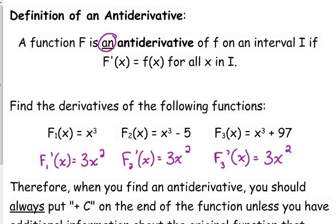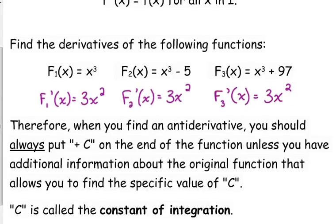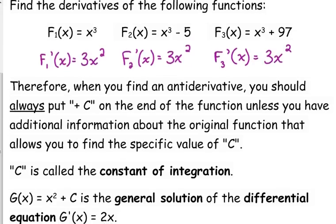So whenever you find an anti-derivative, you should always put a plus C on the end of the function unless you're given additional information about the original function that allows you to find C. We call C the constant of integration. You have to put it in there — it's a detail you can't lose, because if you don't include it, you're losing information about the original function. So anytime you take an anti-derivative, you have to put the plus C on the end.